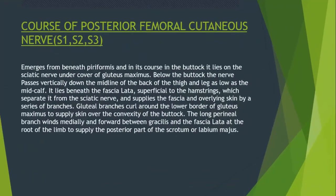Now let's talk about the course of the posterior femoral cutaneous nerve. It emerges from the pelvic cavity via the infrapiriformic compartment, and in its course in the buttock it lies on the sciatic nerve under the cover of gluteus maximus. After traversing the infrapiriformic compartment of the greater sciatic foramen, it lies on the sciatic nerve. Below the buttock, the nerve passes vertically down on the midline of the back of the thigh.